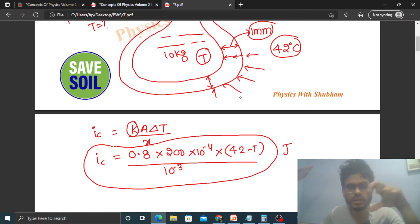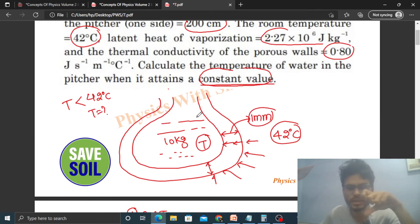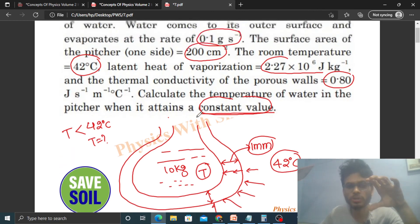Heat flows from outside into the pitcher. If heat goes into the pitcher, the water's temperature should increase. But the water's temperature is constant - how is this possible? The heat that goes into the pitcher is used by the water to evaporate. The water inside uses this heat to evaporate on the outer surface.